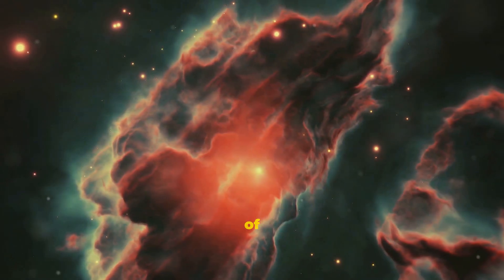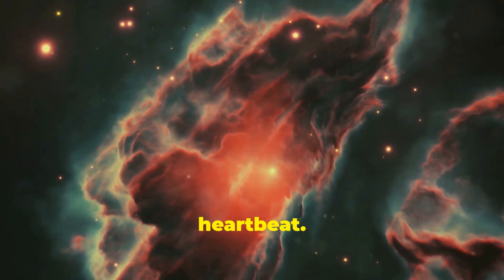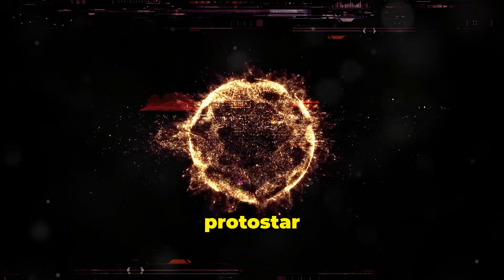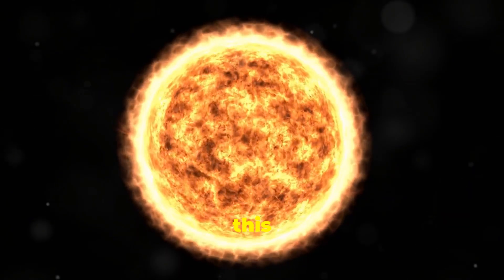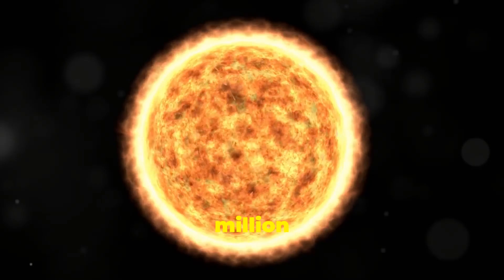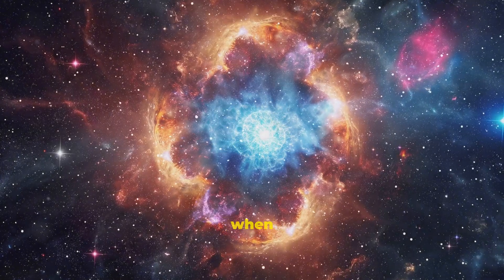This was the birth of a protostar, the Sun's first heartbeat. As the protostar grew, pressure and temperature in its core skyrocketed. Imagine this. The core reached over 10 million degrees Celsius. That's when the magic happened.